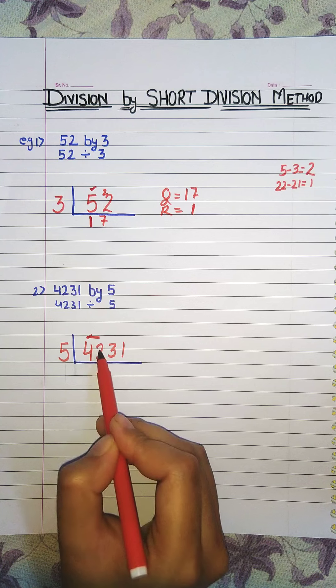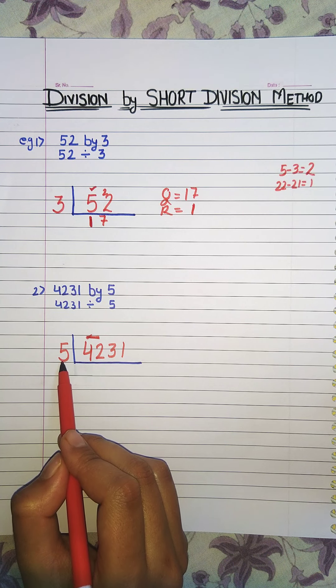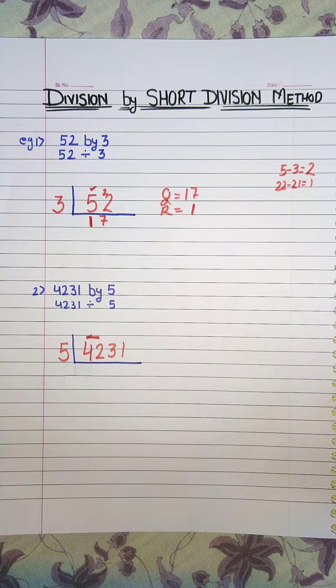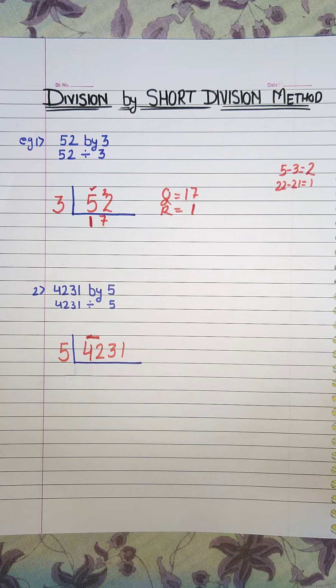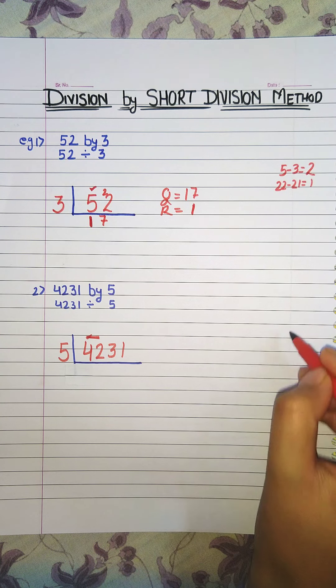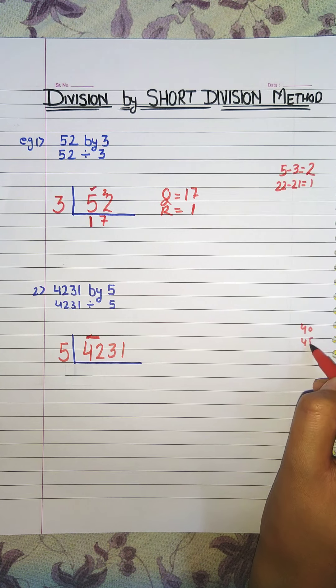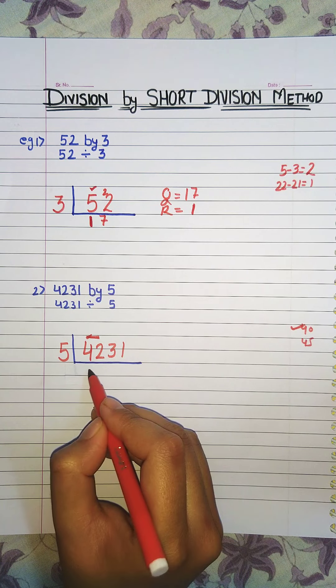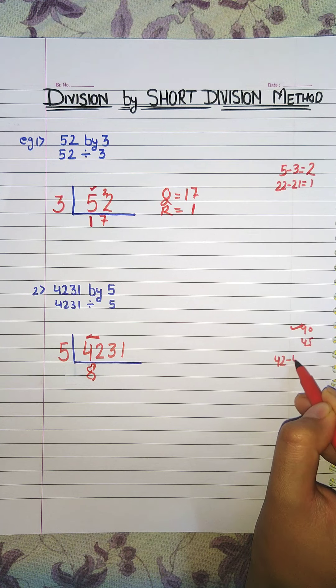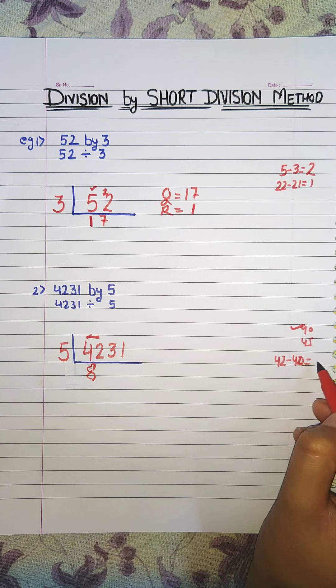Now recite the table of 5 till we reach 42. So 5 ones are 5, 5 twos are 10, 5 threes are 15, 5 fours are 20, 5 fives are 25, 5 sixes are 30, 5 sevens are 35, 5 eights are 40 and 5 nines are 45. So 40 is suitable.